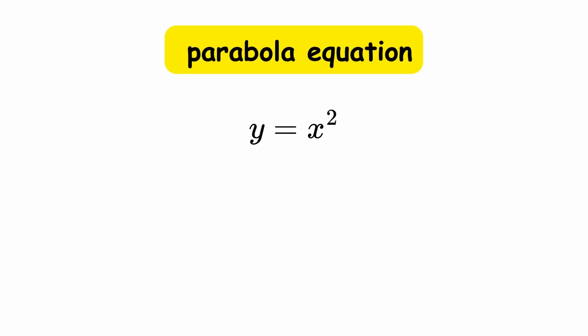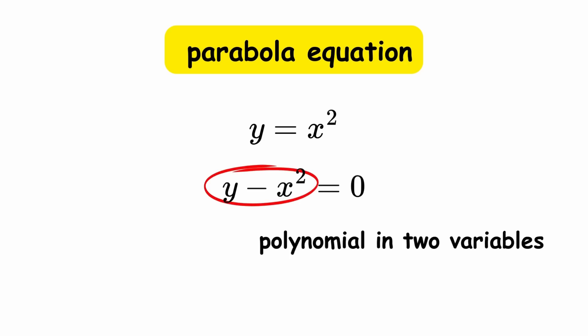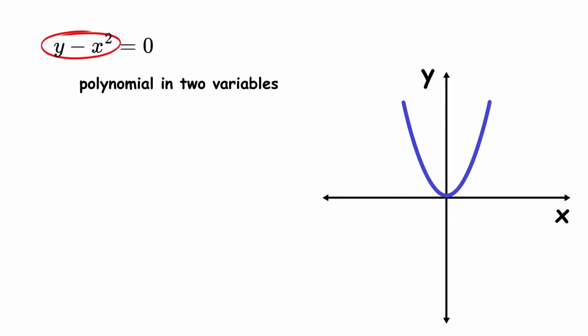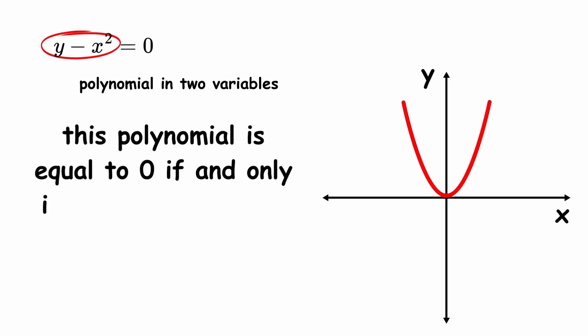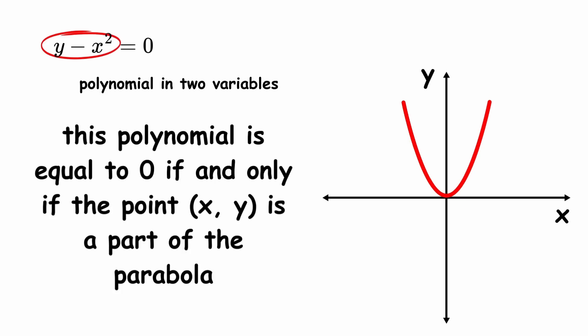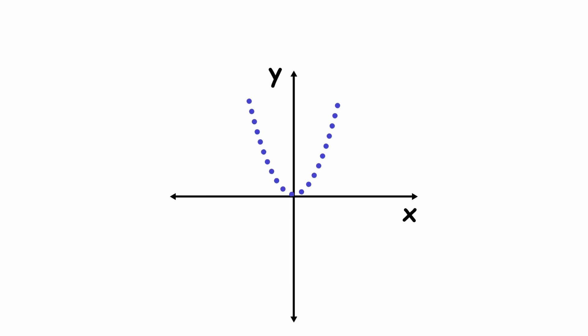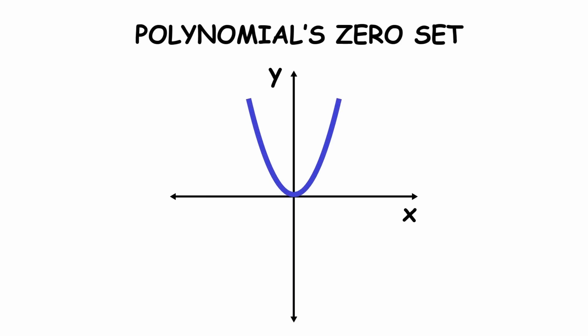Now, let's take the parabola equation and move everything to the left-hand side, resulting in y minus x squared equals 0. The expression y minus x squared is a polynomial in two variables, and the equation states that this polynomial is equal to 0 if and only if the point xy is a part of the parabola. The set of points composing the parabola is known as the polynomial's zero set.